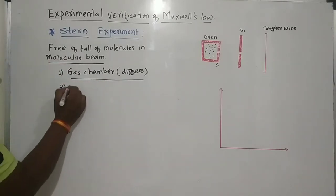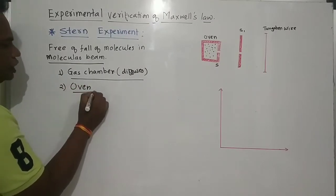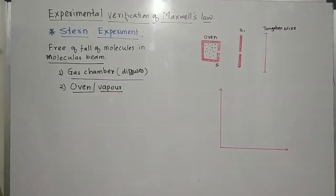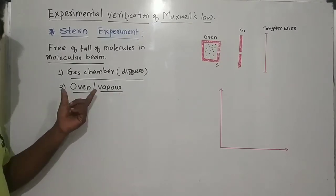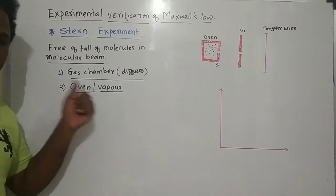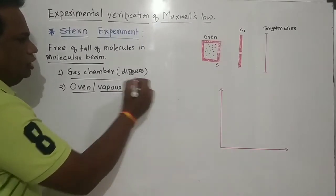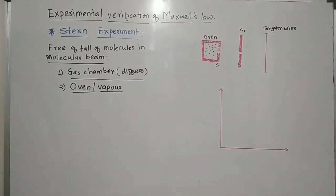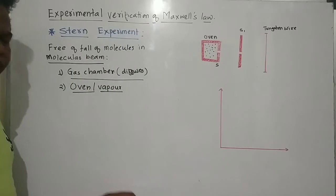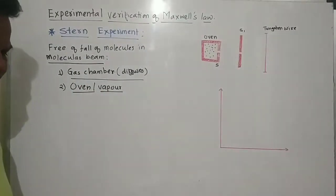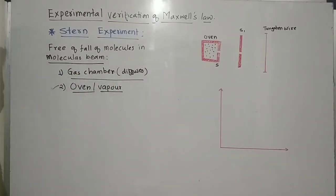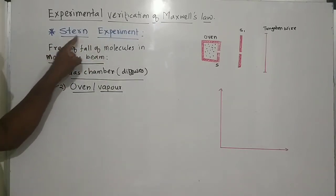The second method uses an oven, O1, which contains the vapours of a particular element. Vapour is nothing but one type of gas molecule — the molecules of a particular matter. So these vapours are obtained in the form of a beam and are considered to fall freely under the gravitational force according to their velocity. This is the second method, used in the Stern experiment.